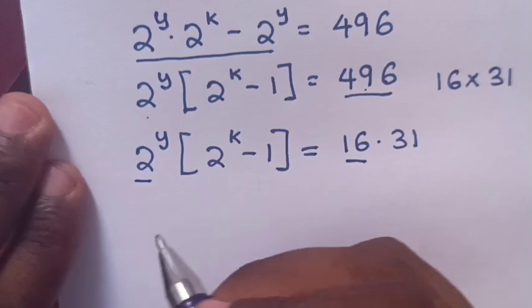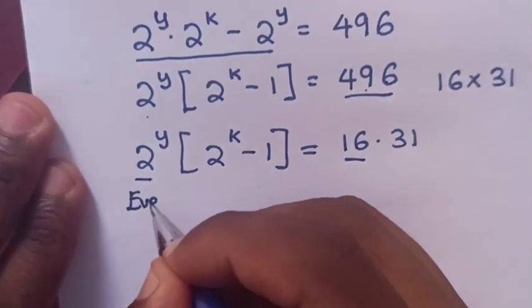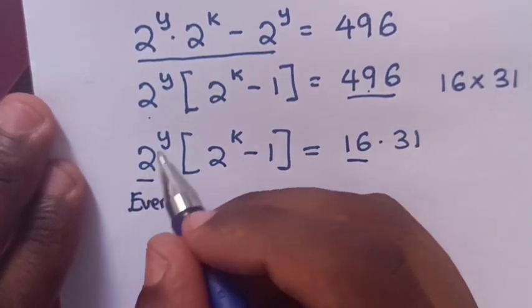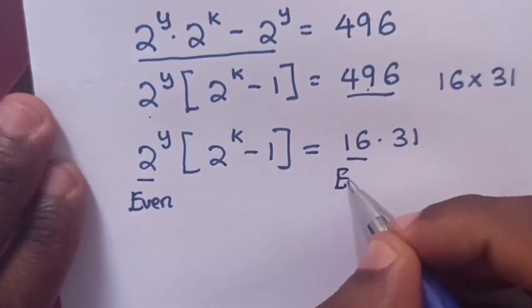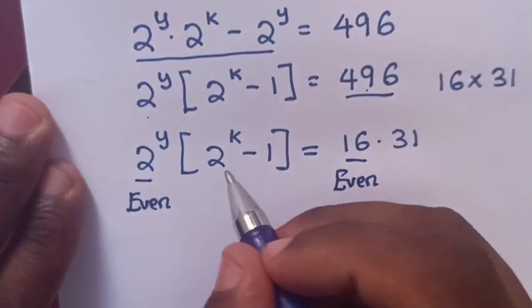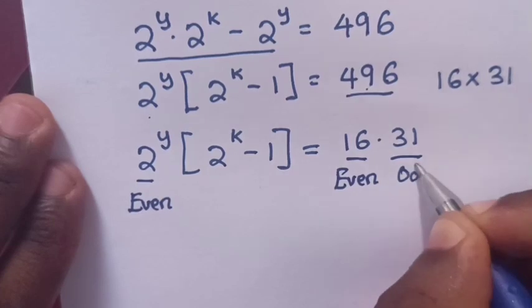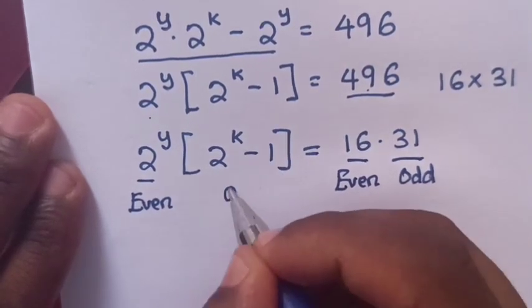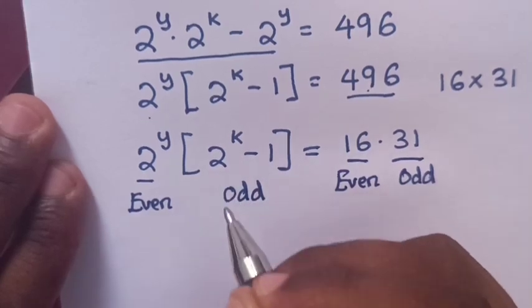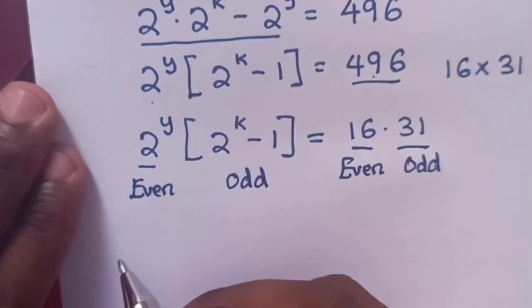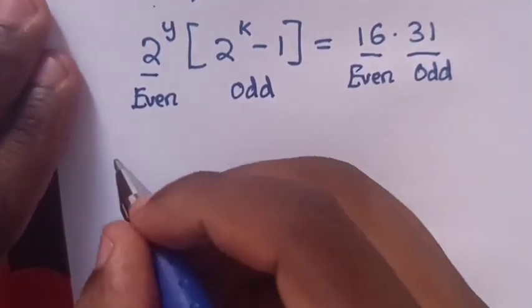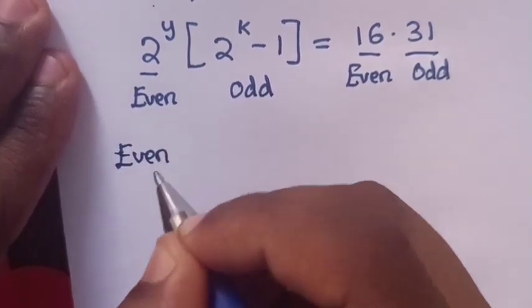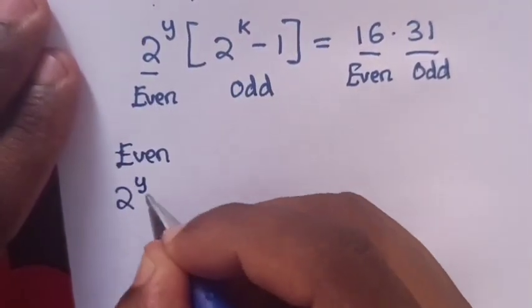This means 2 power y equals 16, because 2 power y times 2 power n is even, so it equals the even number which is 16. And 31 is odd, so 2 power k is even minus 1 will be odd. Therefore we'll solve by comparison between the even and odd numbers.